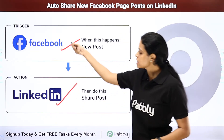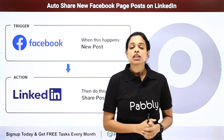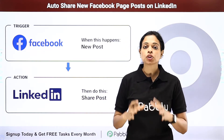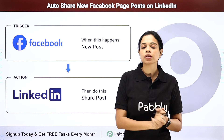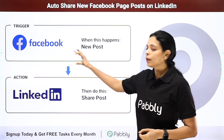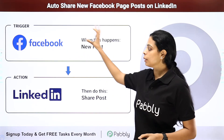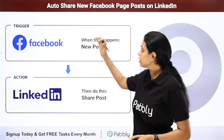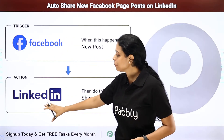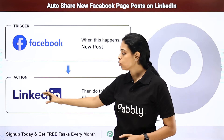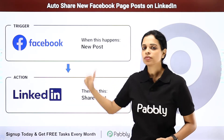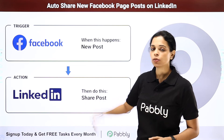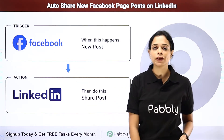Next, we have Facebook and LinkedIn. Facebook is one of the most common social media platforms. Suppose you have posted something on Facebook — automatically the same post will be reflected on LinkedIn. Just integrate these two: trigger application would be Facebook and action application would be LinkedIn.